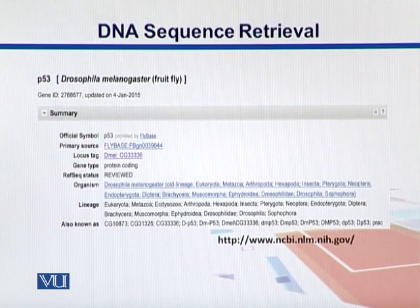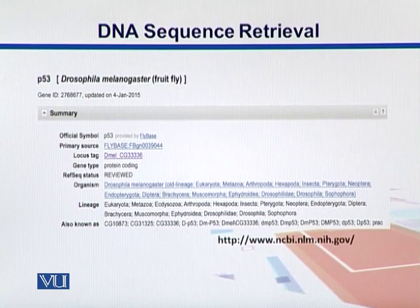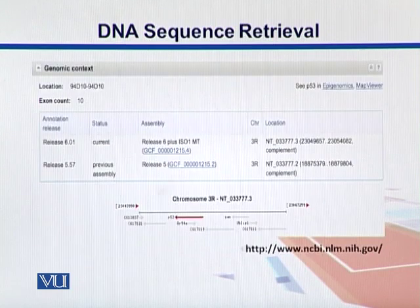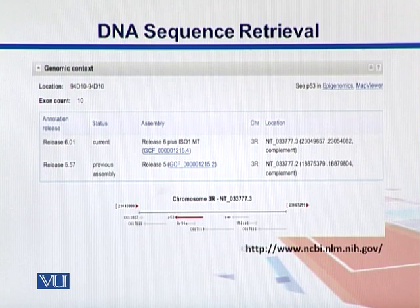The RefSeq status says reviewed. Sometimes genes are submitted and reviewed by other scientists, and this gene has been reviewed. In the organism section we see the classification of that organism. Below that, aliases are written down. We can also look into the structure of this gene and its genomic coordinates — where we can see the location from which it is coming.